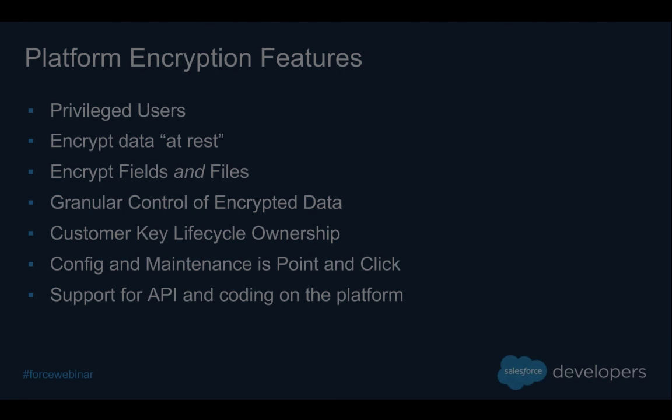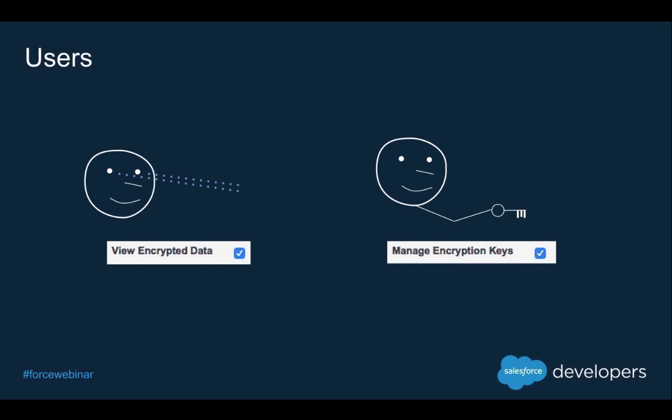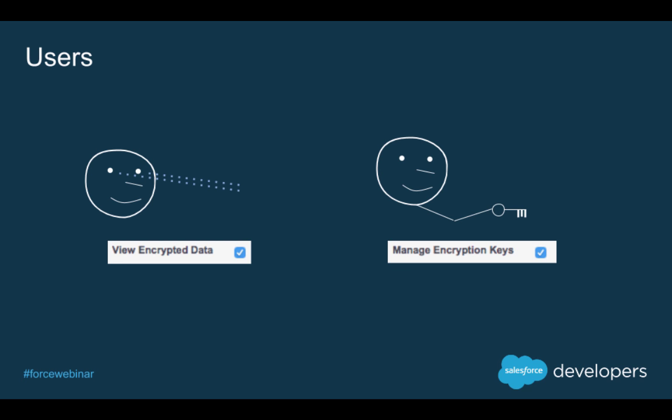Platform encryption makes use of the legacy 'view encrypted data' setting in your profile or permission set — the same setting that enables a privileged user for your classic encrypted text field. Users with this permission turned on will view encrypted data in clear text. Users without this permission will view a masked version. There's another privileged user with a permission called 'manage encryption keys,' allowing that user to rotate the keys.